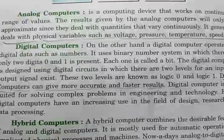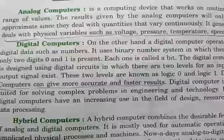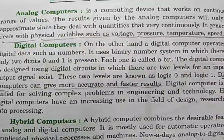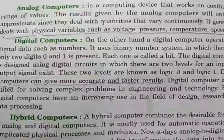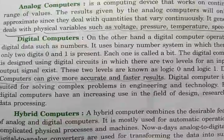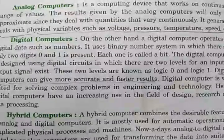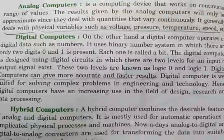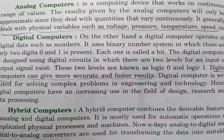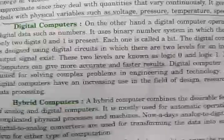An analog computer is used for computing a continuous range of values. The result given by an analog computer will be approximate, since they deal with quantities that vary continuously. They generally deal with physical variables such as voltage, pressure, temperature, and speed. Analog computers are mostly used in hospitals.